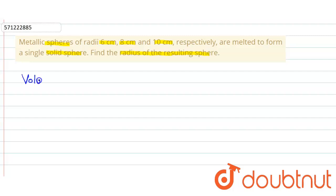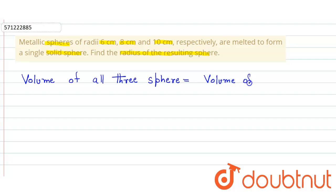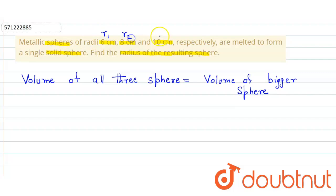The volume of all three spheres will be equal to the volume of the bigger sphere. We assume that 6 cm is r1, 8 cm is r2, and 10 cm is r3. Now we simply apply the formula of volume.